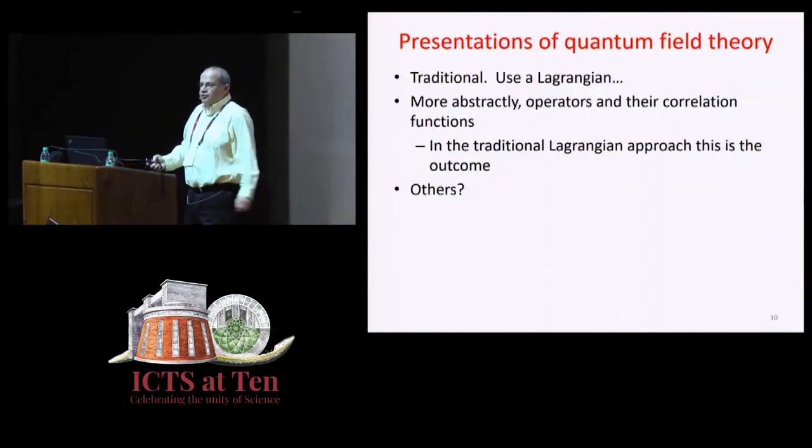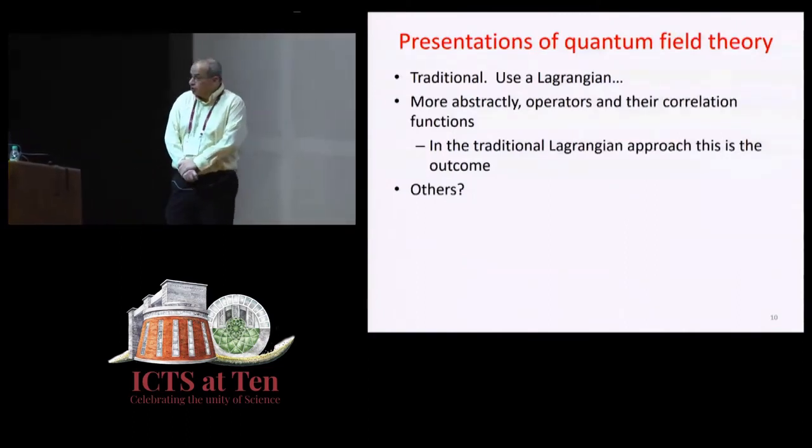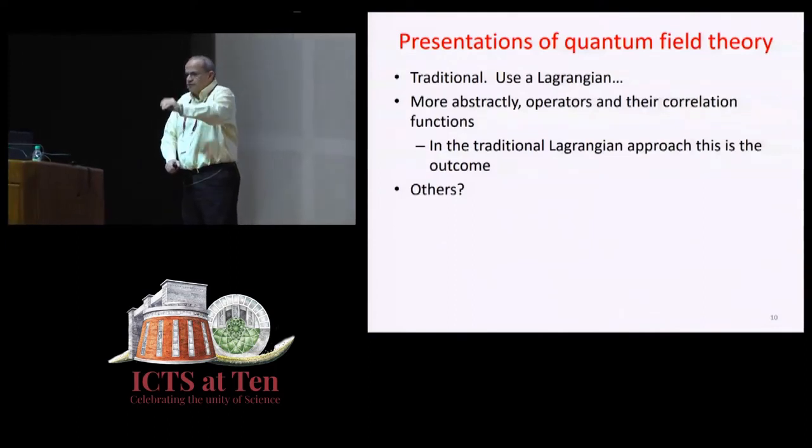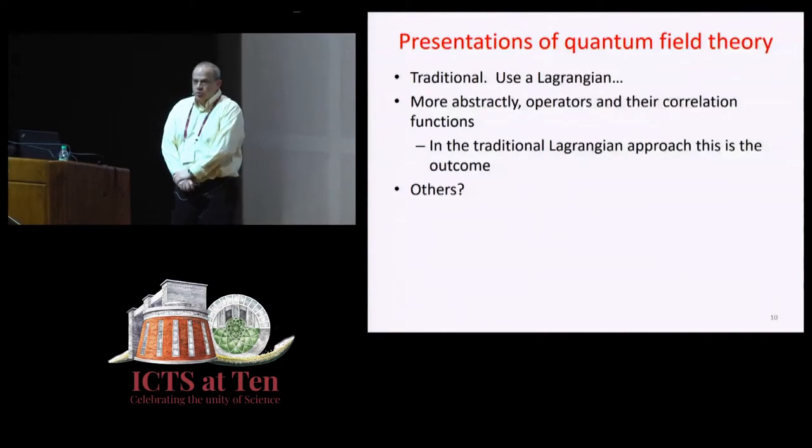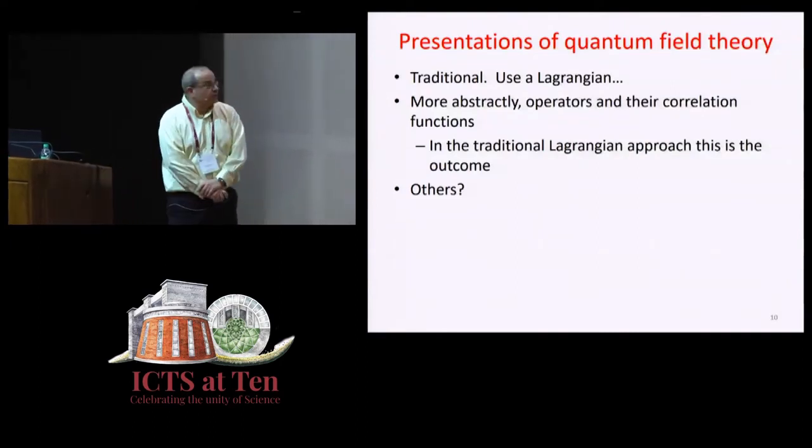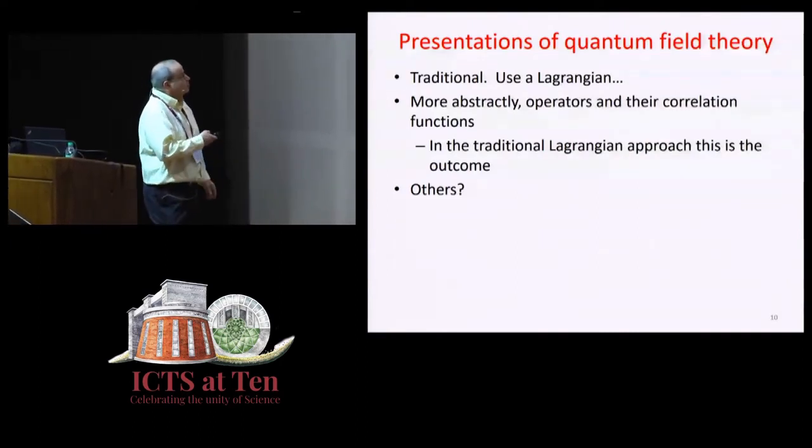So how do we think of quantum field theory? There are two main approaches, and there are other sub-approaches which are smaller. The first is the traditional approach, where we start with the Lagrangian. We write down the Lagrangian and we quantize it. I'll have a few more slides about that soon.